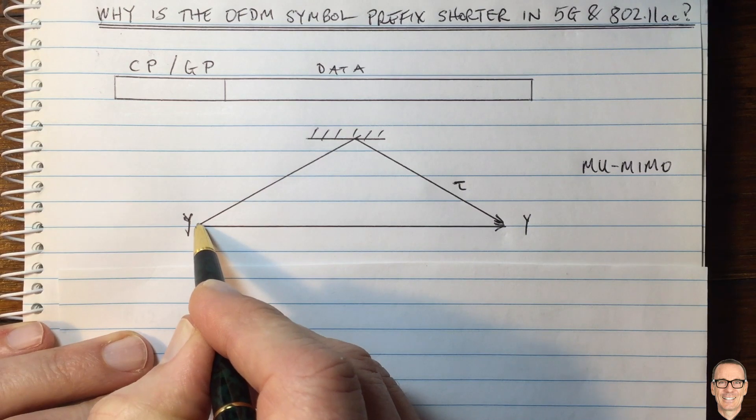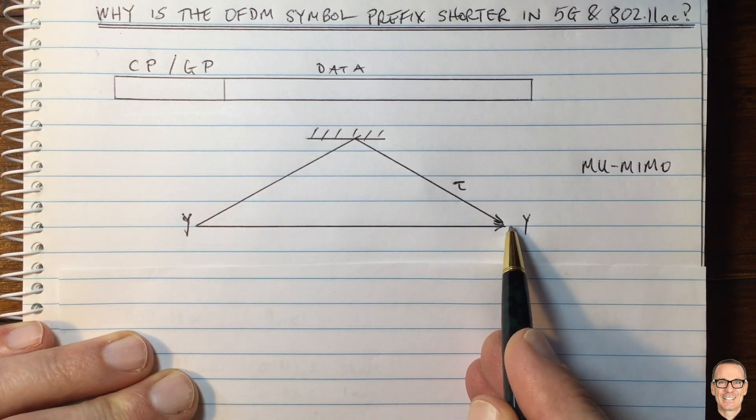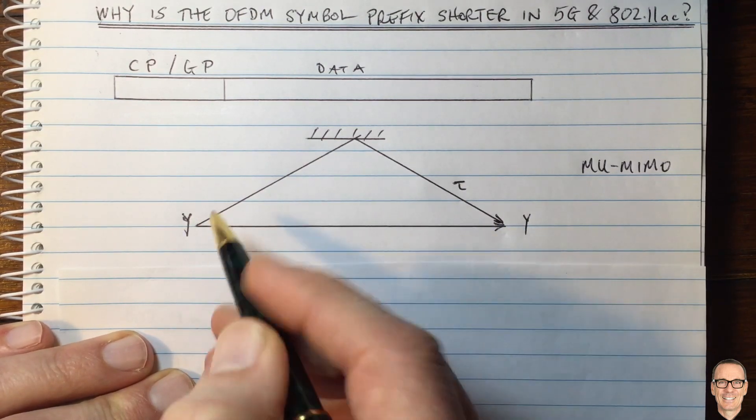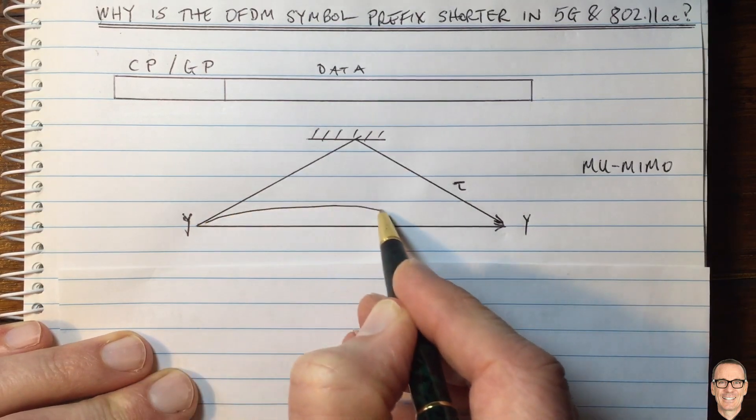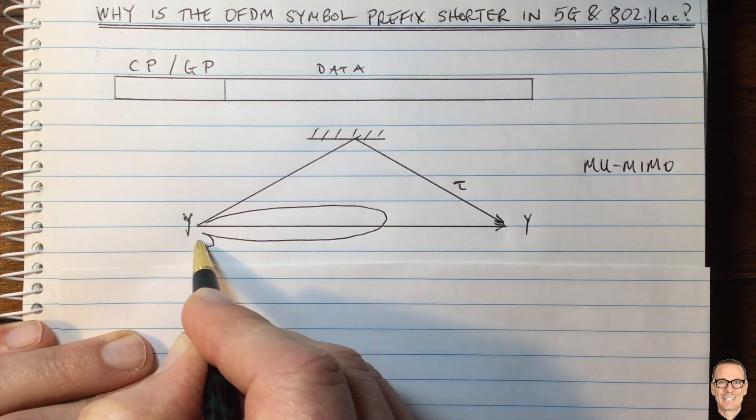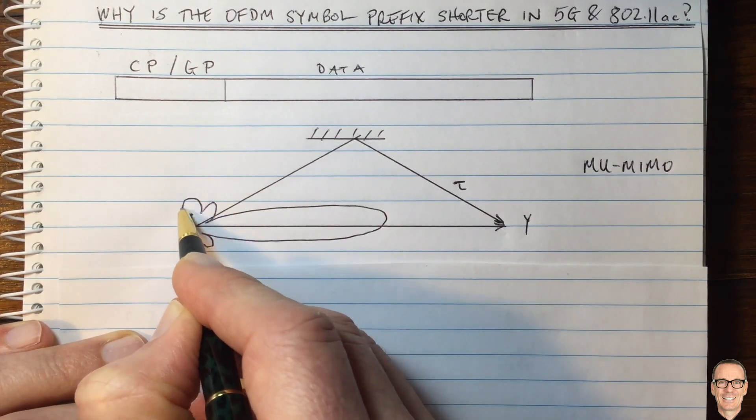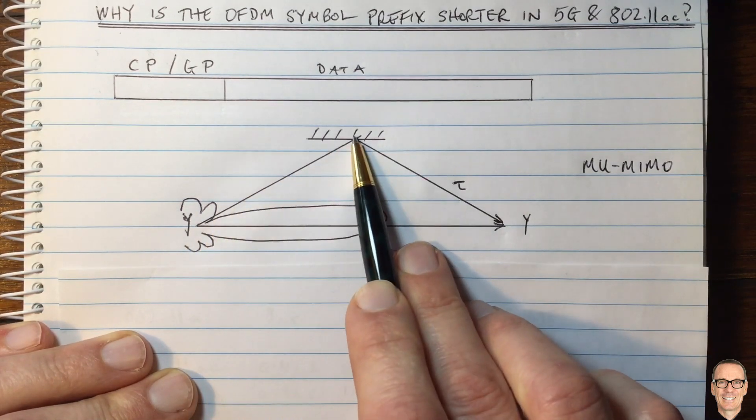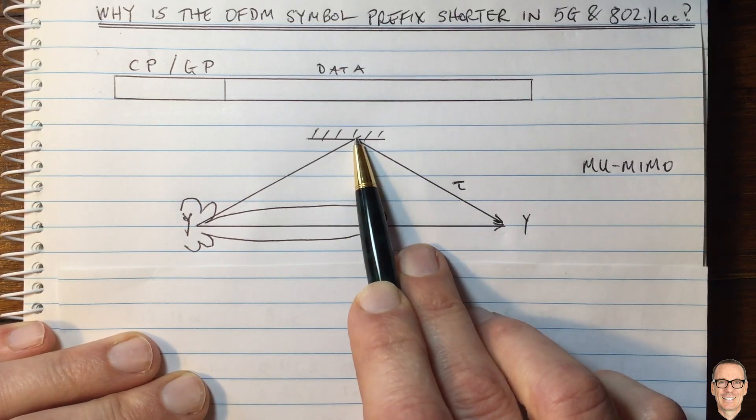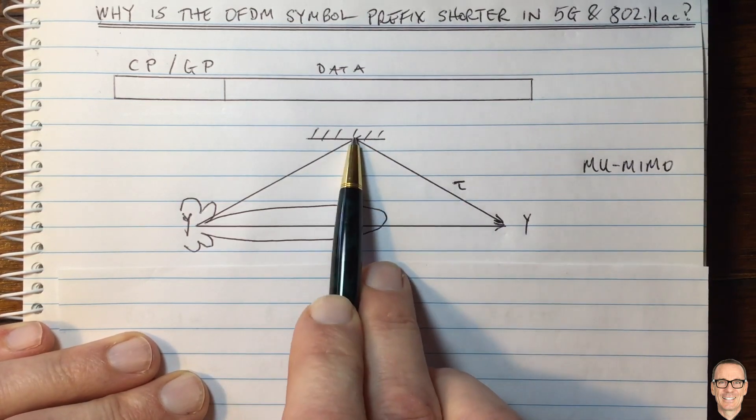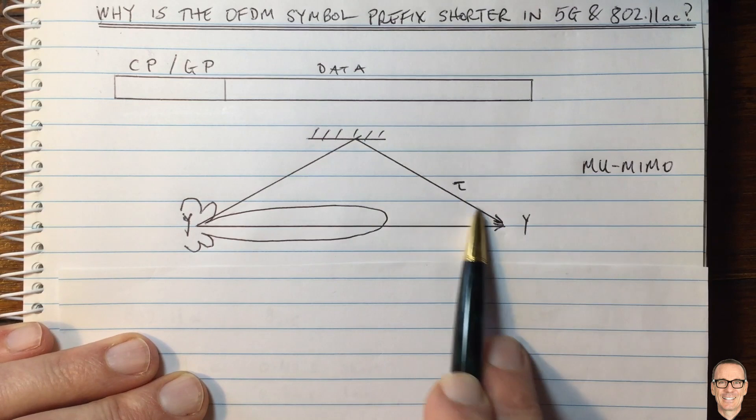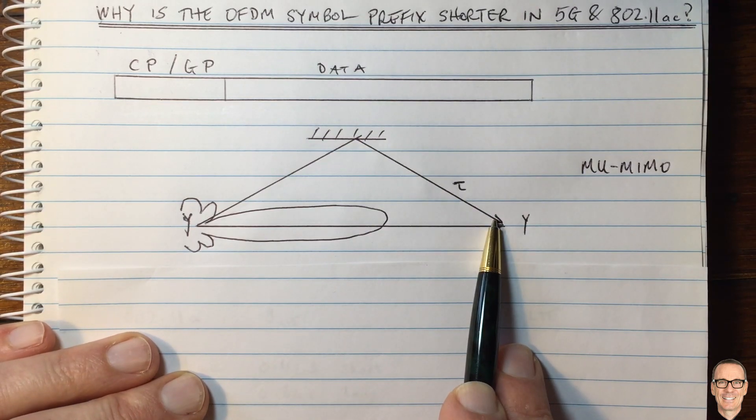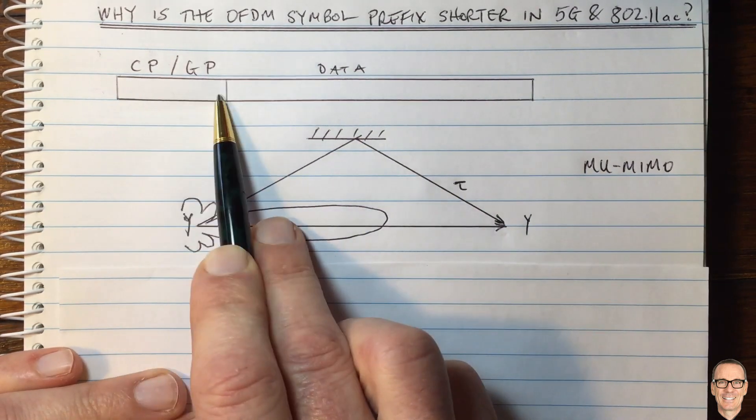In this case you're electromagnetically finding the direction and pointing a beam toward your intended receiver. Therefore energy is not being directed toward reflectors, so there's less effect from the reflective paths. Again, the prefix can be shorter.